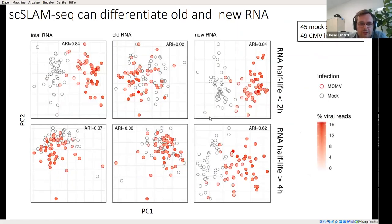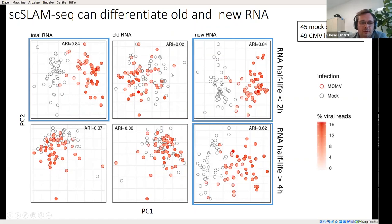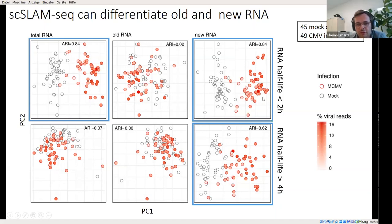Another check uses six principal component analyses, done specifically on genes known to be regulated, either with short or long RNA half-life. The left column shows PCA on total RNA — what you would get without metabolic labeling. The middle shows old RNA and the right shows new RNA. For genes with short-lived RNAs, you see a separation already in total RNA, but not for long-lived RNAs — because all changes are masked by pre-existing RNA still present after two hours. In old RNA, no difference is seen in any case, and in new RNA, clear separation is seen for both short-lived and long-lived RNAs.